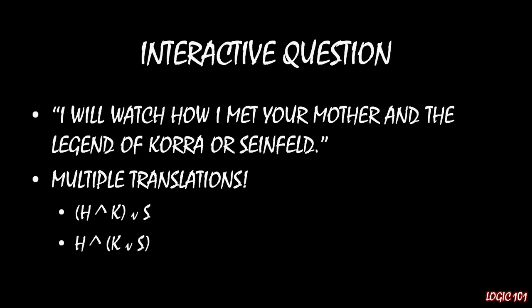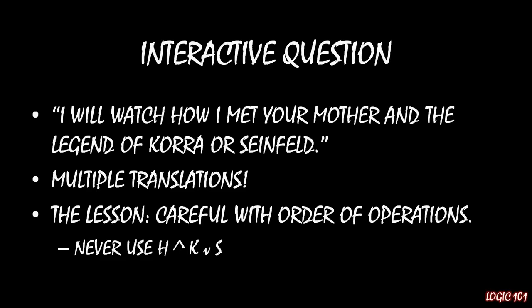The big distinction is: in the first interpretation, I may or may not be watching How I Met Your Mother; in the second, I definitely am. These are logically distinct sentences, and this is another reason why English can be very imprecise. When translating English into logic, be careful to capture what the original writer intended — with an unclear sentence, you may need to ask them what they meant. The lesson is: be careful with order of operations. Use parentheses around grouped operations, and never write something like H ∧ K ∨ S without parentheses. That wraps up conjunctions — in the next lecture, we'll continue our journey through logical operators.